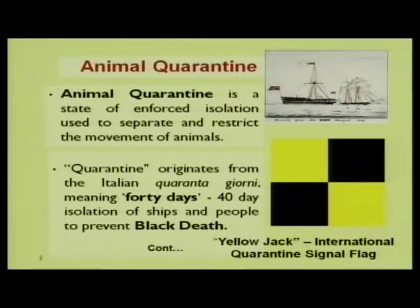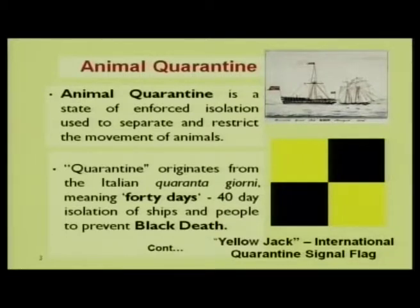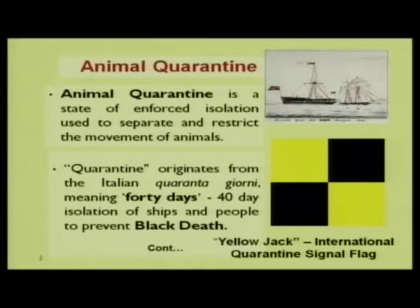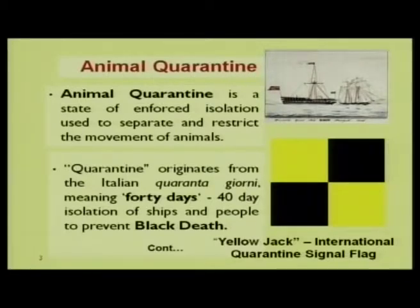The term Quarantine originates from the Italian word Quarantogiorni, meaning 40 days. During earlier days, 40 days isolation of ships and people to prevent the black death disease of plague was prevalent. On the top corner of this slide, you will find a pictorial depiction of a quarantined ship called Rin. On the bottom side, we have a yellow jack, which is the international quarantine signal flag with two yellow squares and two black squares. If a ship is having this flag hoisted, that means the ship is under quarantine.